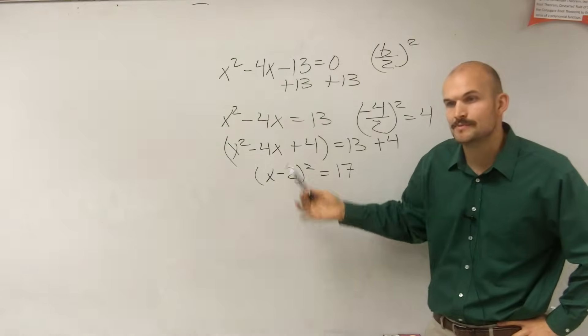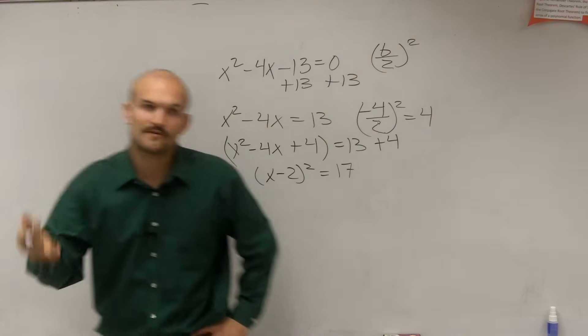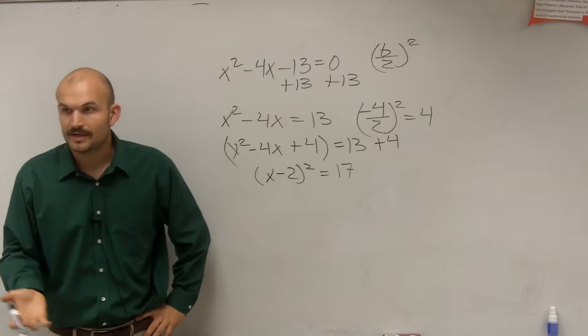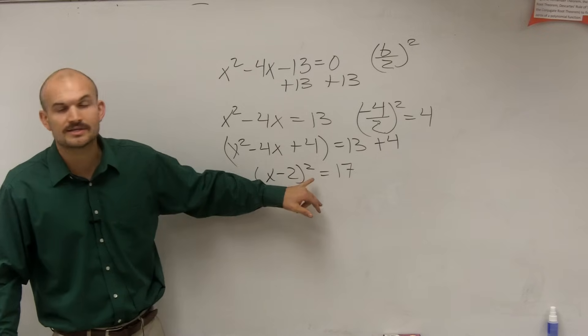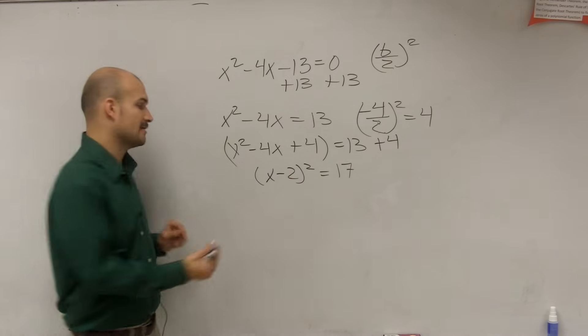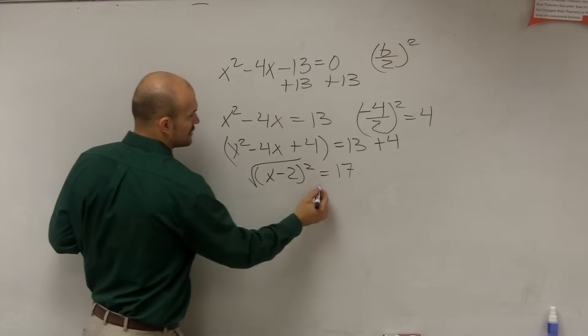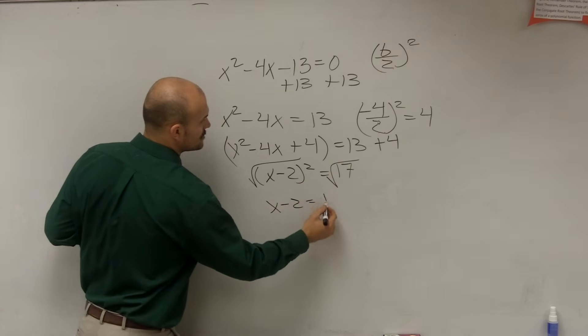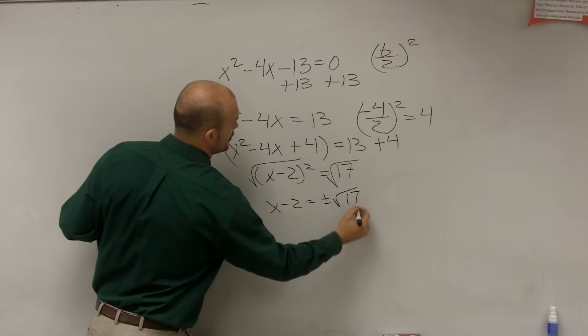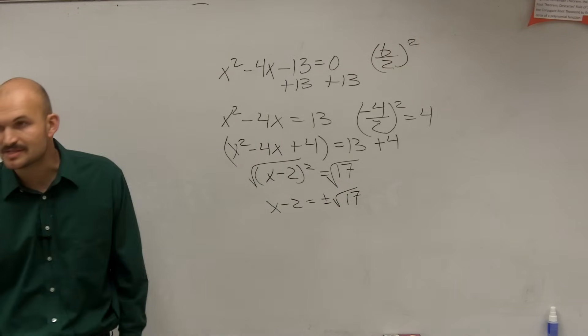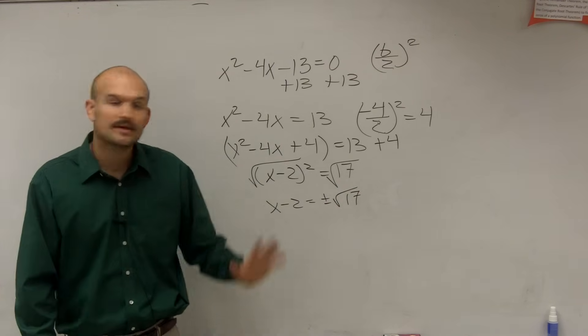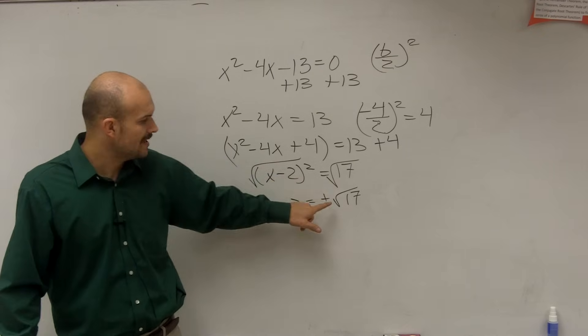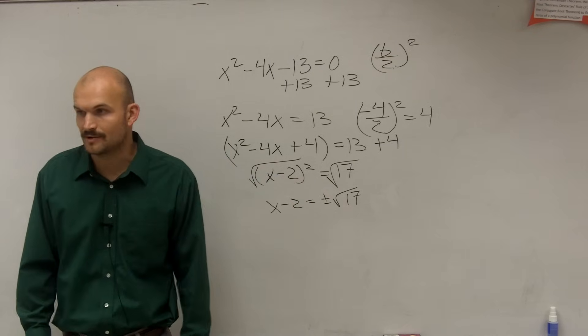But now I only have one x, I can use my inverse operations. So the first inverse operation I have to do is my, I have to undo this exponent of 2. So I have to take the square root on both sides. Therefore, I have x minus 2 equals plus or minus the square root of 17. Now, the square root of 17 cannot be simplified, so we're going to leave it like that. Just remember, since I introduced the square root, I have to take the plus or minus of the number.